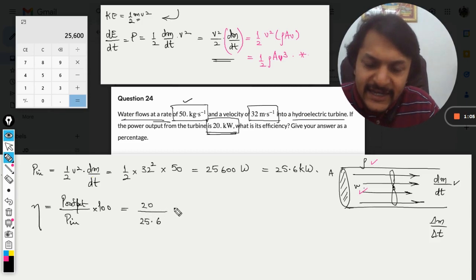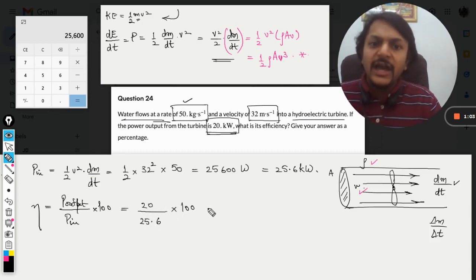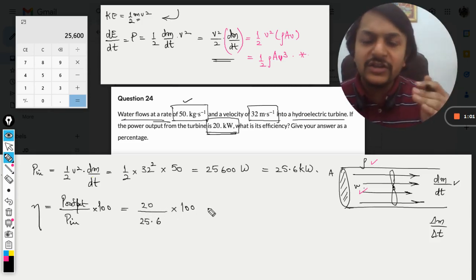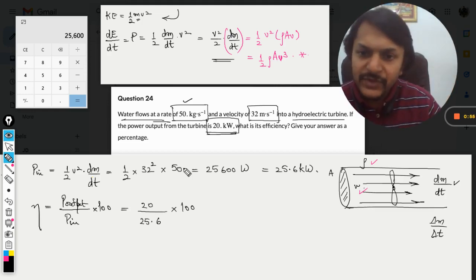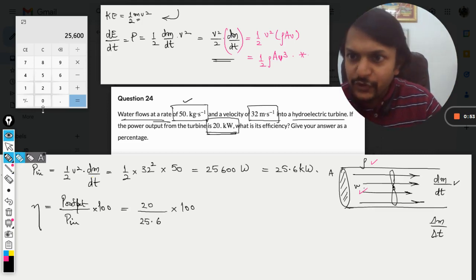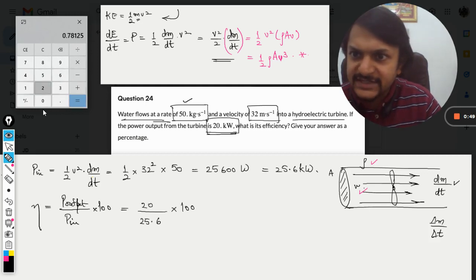Now we have to calculate: 20 divided by 25.6 times 100.